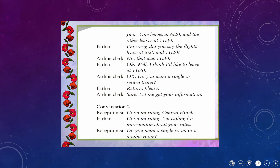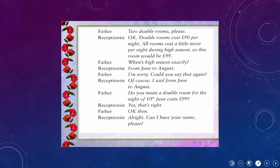Clerk: 'Let me get your information.' Conversation 2 — Receptionist and father. Receptionist: 'Good morning, Central Hotel.' Father: 'Good morning, I'm calling for information about your rates.' Receptionist: 'Do you want a single room or a double room?' Father: 'Two double rooms please.' Receptionist: 'Double rooms cost 90 pounds per night. All rooms cost a little more per night during high season, so this room would be 99 pounds.' Father: 'When is high season exactly?' Receptionist: 'From June to August.' Father: 'I'm sorry, could you say that again?' Receptionist: 'From June to August.' Father: 'Do you mean a double room for the night of 10th June costs 99 pounds?' Receptionist: 'Yes, that's right.'